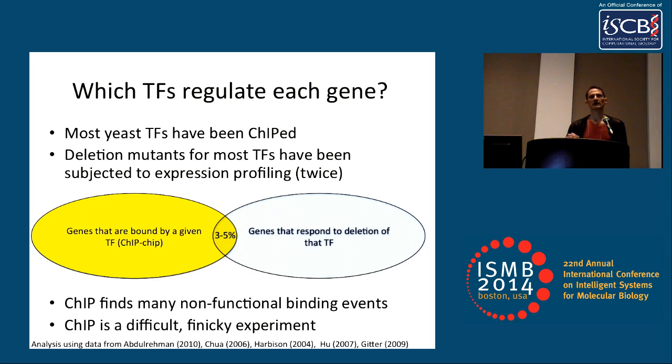It seems that CHIP is finding many non-functional binding events, and perhaps that gene expression analyzed in this way is finding many indirect targets of transcription factors. Since CHIP is a difficult, finicky experiment, we decided to see if we could get more information out of the expression profiles of transcription factor deletion strains.